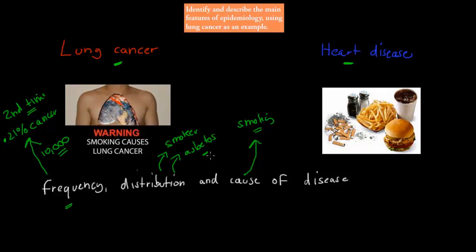How do we know the frequency? How do we know the distribution of the different types of disease? That's what we're going to talk about in this video, because the dot point says: identify and describe the main features of epidemiology using a lung cancer example. So we're going to cover what epidemiology is, then use lung cancer as an example of how we use epidemiology to find out frequency, distribution, and cause of disease — because that's more or less what epidemiology is all about.